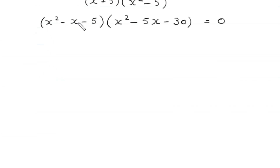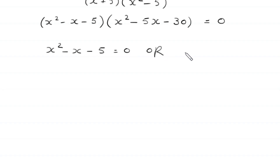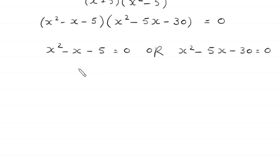From here, either the expression x squared minus x minus 5 is equal to 0, or the expression x squared minus 5x minus 30 is equal to 0. Now we have two quadratic equations. First we solve the quadratic equation x squared minus x minus 5 equals 0; this is not factorable, so we use the quadratic formula.